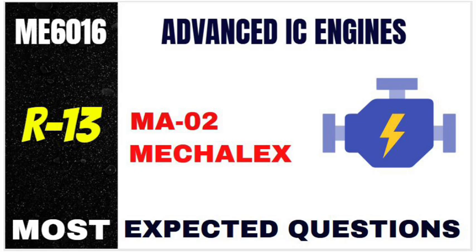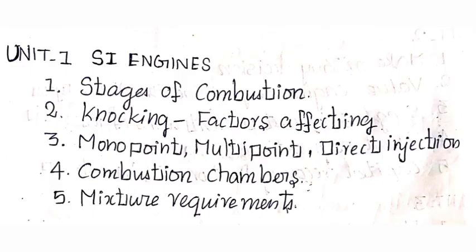First unit, we need to use the spark ignition engine or petrol engines. We need to use the air fuel mixture. We have a combustion engine chamber. Here we need to use the spark ignition, then we use the wheels. This unit covers theoretical and diagrammatic representation.